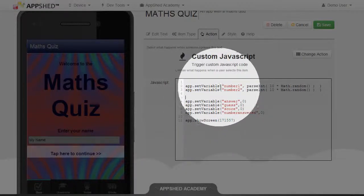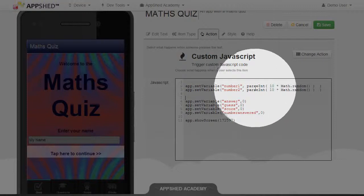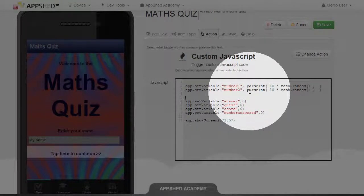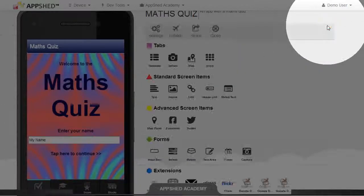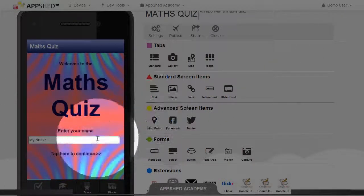So the code is now setting number 1 to a random integer, and number 2 the same. Let's try that out. Let's click Save. And then tap the link.